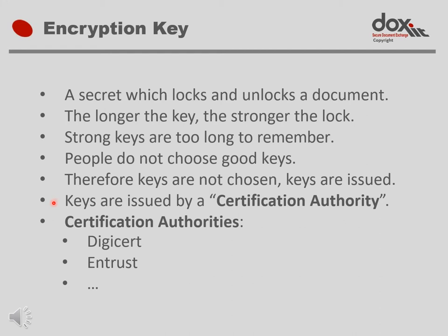Encryption keys are issued by a certification authority, or a CA. These are sometimes also called certification service providers. Encryption keys are issued packaged as something called a certificate. One of the next slides will explain what a certificate is and how an encryption key forms part of a certificate. Certification authorities are often private companies selling encryption keys in the form of certificates. Two examples are companies called DigiCert and Entrust.